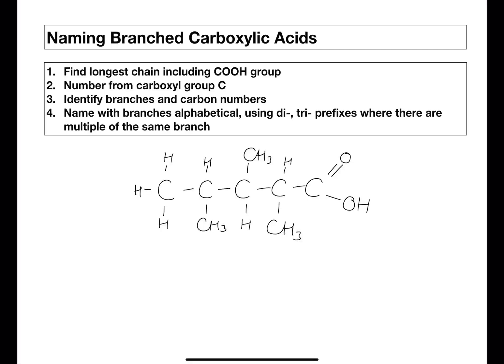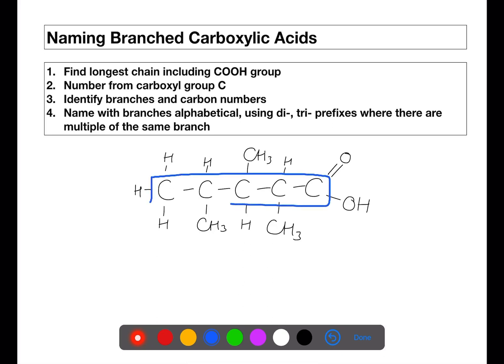Let's look at a quick example. First of all our longest chain including the carboxyl group is this one here of five carbons. So the base of the name is going to be pentanoic acid.